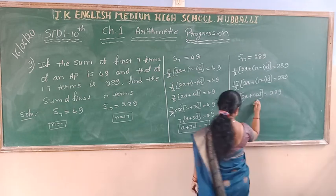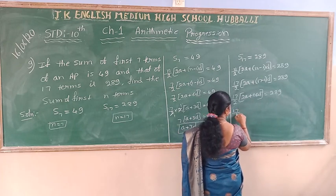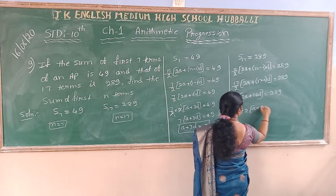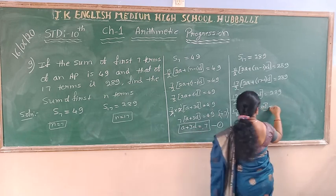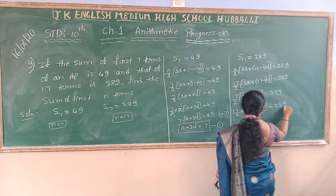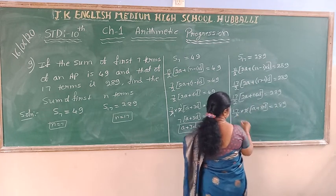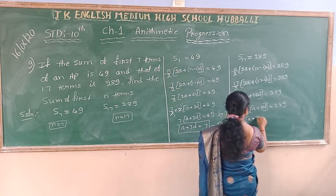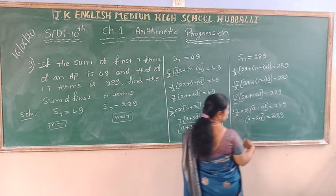Taking 2 as common, it becomes 17 into A plus 8D is equal to 289. Dividing both sides by 17, A plus 8D is equal to 17. Call this equation number 2.